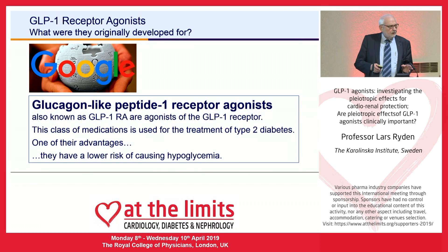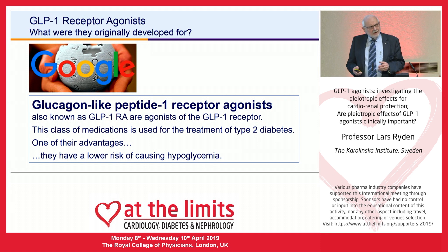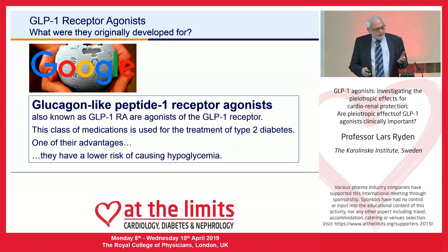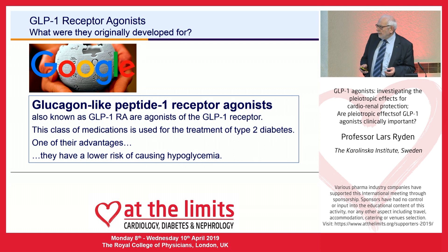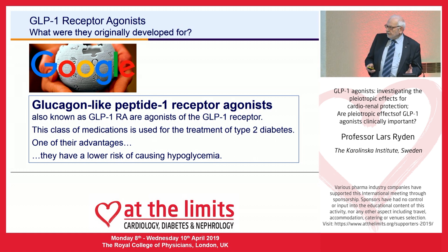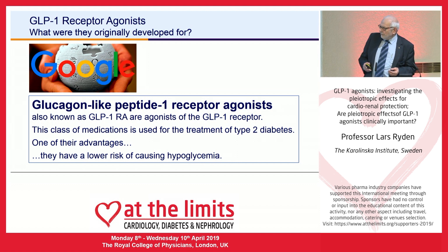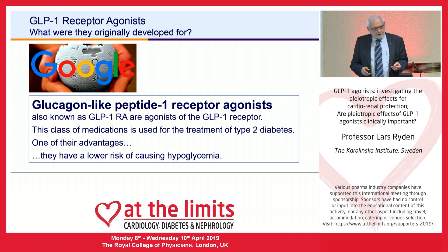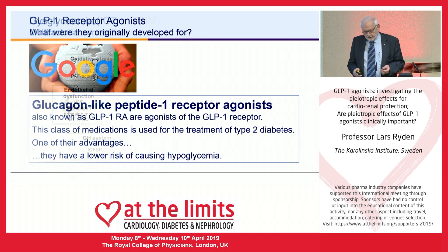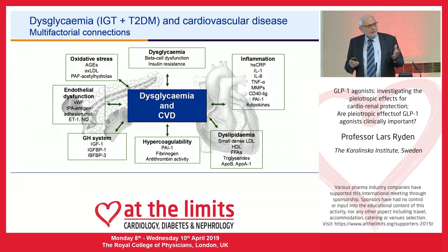What were the GLP-1 receptor agonists actually developed for? They were developed for lowering glucose. They are not only lowering glucose, but one of their advantages is that they have a lower risk of causing hypoglycemia. So this is something we must keep in mind as we continue this review.